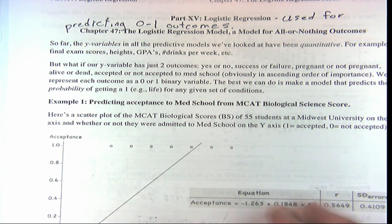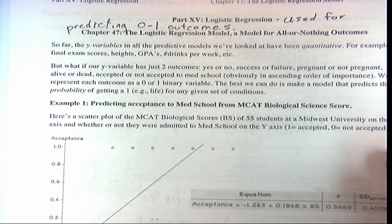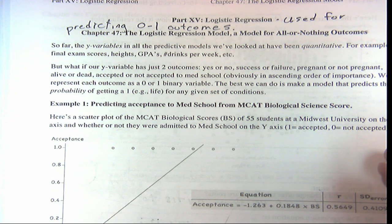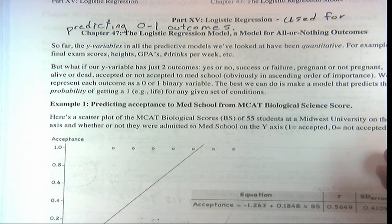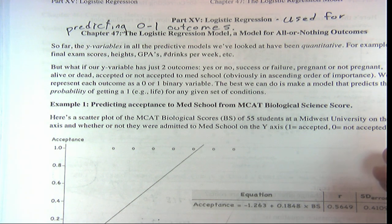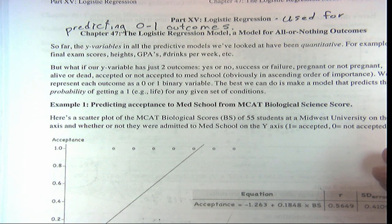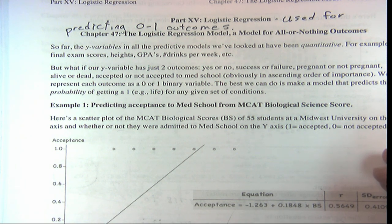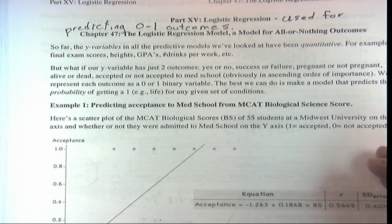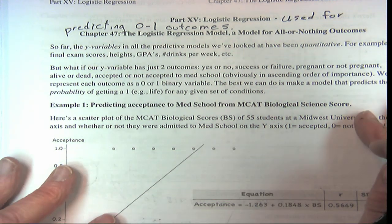We haven't done this yet. All of our y variables when we've done regression have been quantitative. Even when we were doing ANOVA, the x's were categories or groups, but the y was quantitative. So all our regression has been with y being a quantitative variable — one that, if it were a survey question, you'd answer with a number, not yes or no.